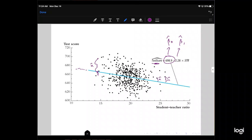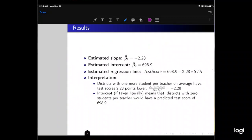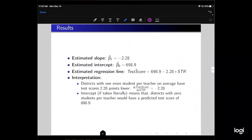Actually, to be precise, the square of those residuals are minimized. So the results of that, the estimated slope is negative 2.28. This is our estimated regression line. The intercept is 698.9, the slope is negative 2.28, and that's our estimated regression line.